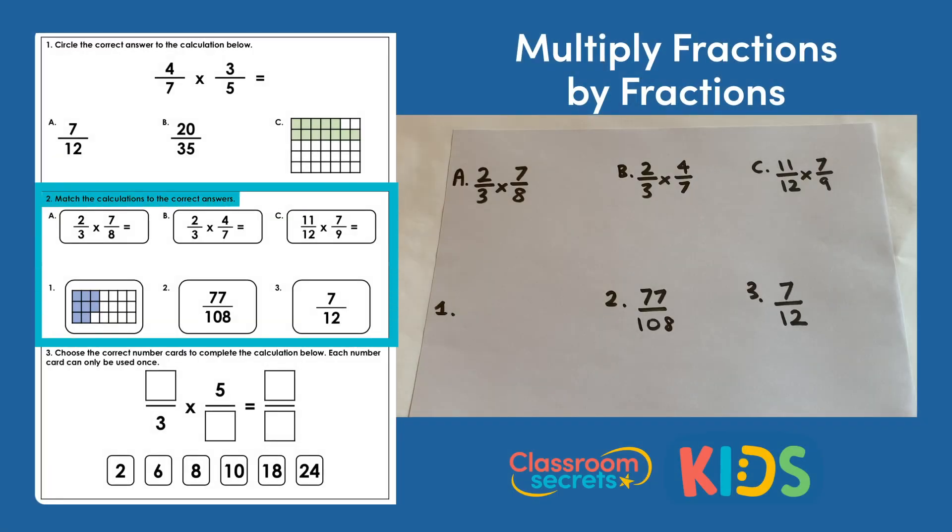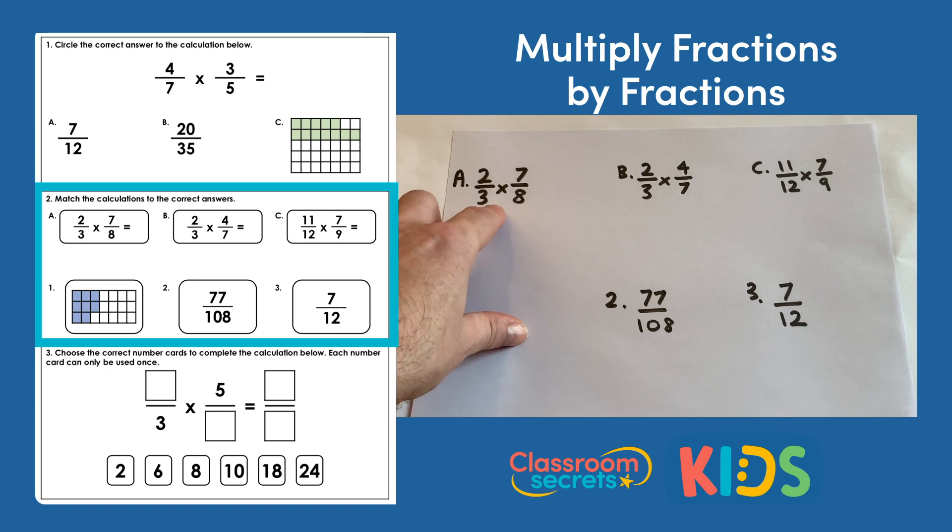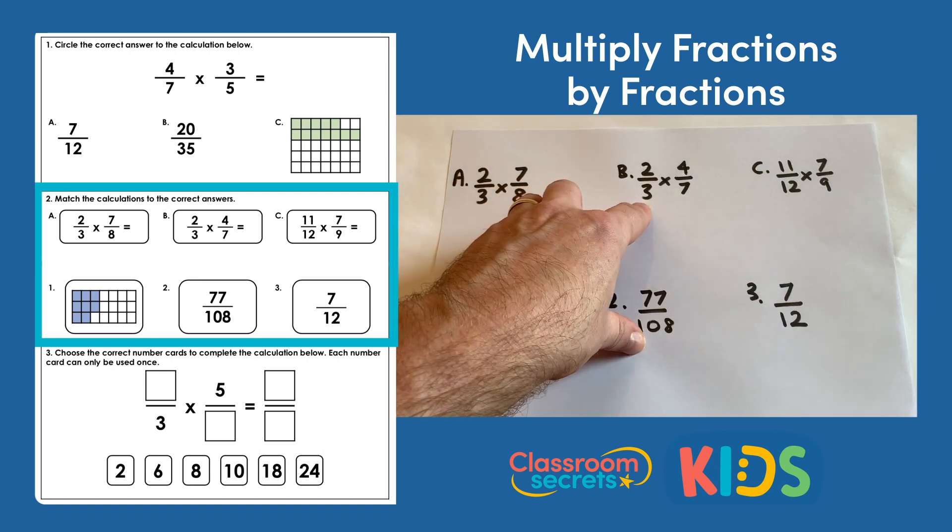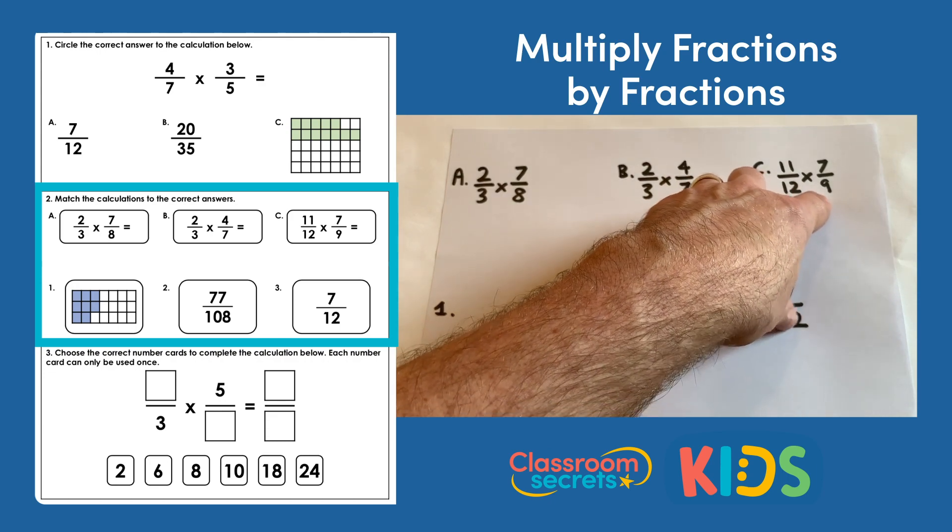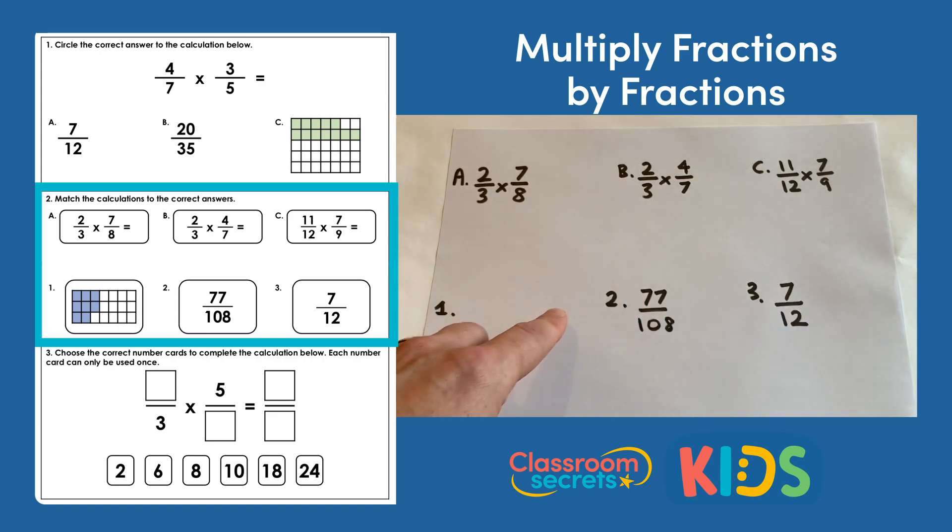Question two says match the calculation to the correct answers. We have A: 2/3 multiplied by 7/8, B: 2/3 multiplied by 4/7, and C: 11/12 multiplied by 7/9, and we have three possible answers we need to match up.